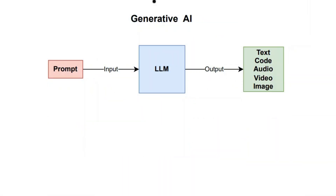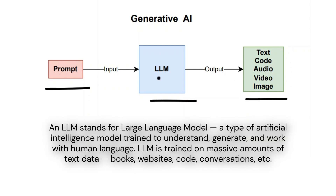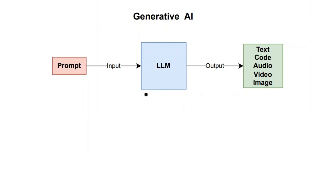Let's start with generative AI. Generative AI takes a prompt as input, the LLM processes it, and the output is either text, code, audio, video, or image. LLM stands for large language model, and it is trained on a huge set of data like books, websites, conversations, and code, and it processes the prompt to create the output.